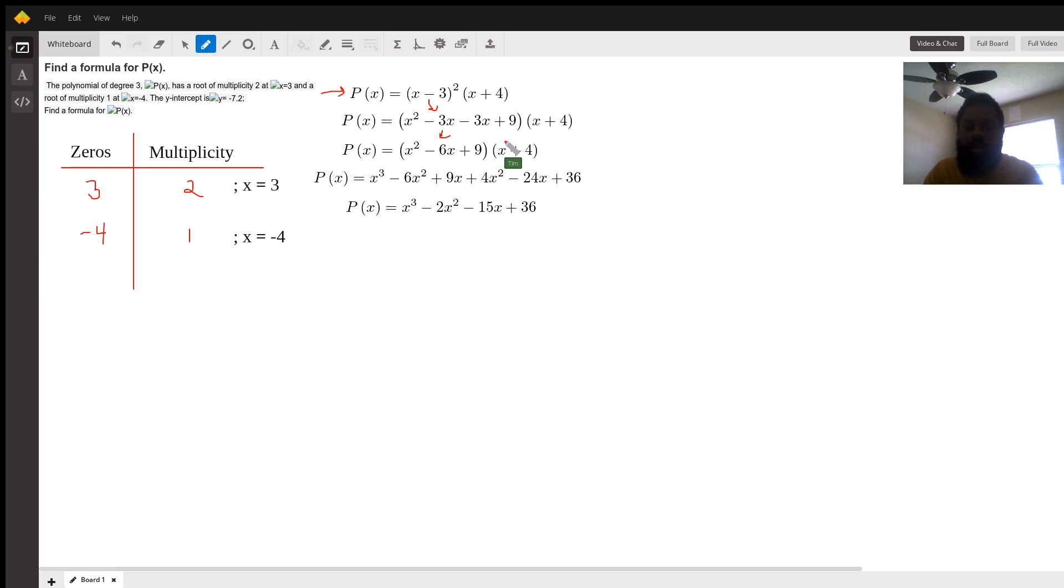Then we multiply the (x plus 4) into the polynomial x squared minus 6x plus 9. So we do x times x squared, x times negative 6x, and x times 9, which is x cubed minus 6x squared plus 9x.